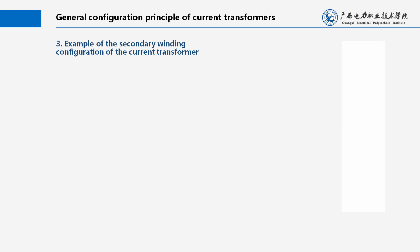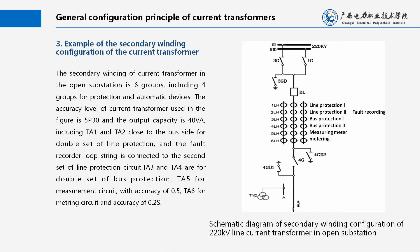Example of the secondary winding configuration of the current transformer: The secondary winding of the current transformer in the open substation is 6 groups, including 4 groups for protection and automatic devices. The accuracy level used is 5P30 and the output capacity is 40VA. TA1 and TA2 close to the bus side are for double set of line protection, with the fault recorder loop connected to the second set of line protection circuit. TA3 and TA4 are for double set of bus protection, TA5 for measurement circuit with accuracy of 0.5, and TA6 for metering circuit with accuracy of 0.2S.